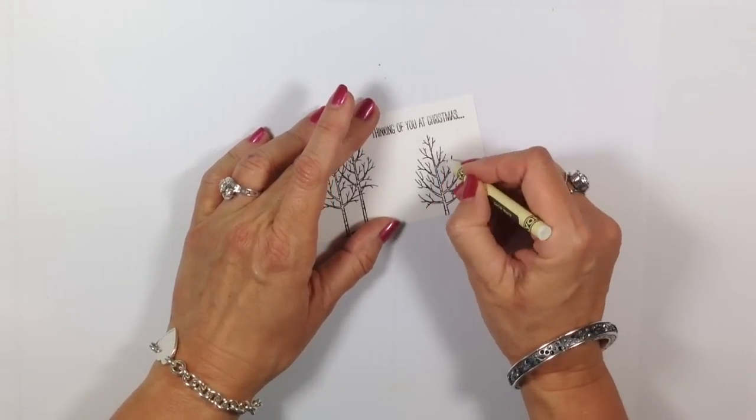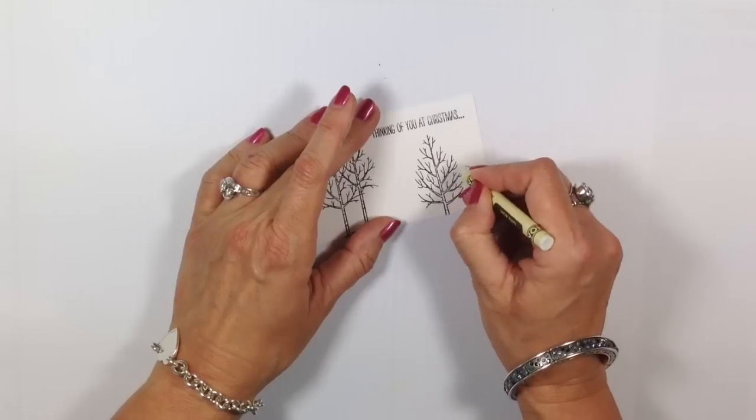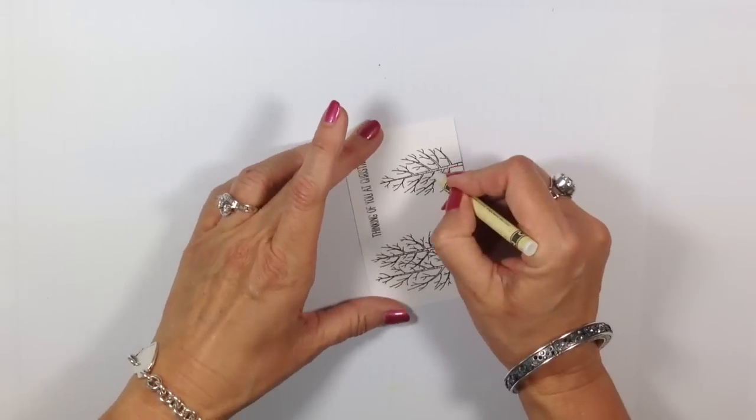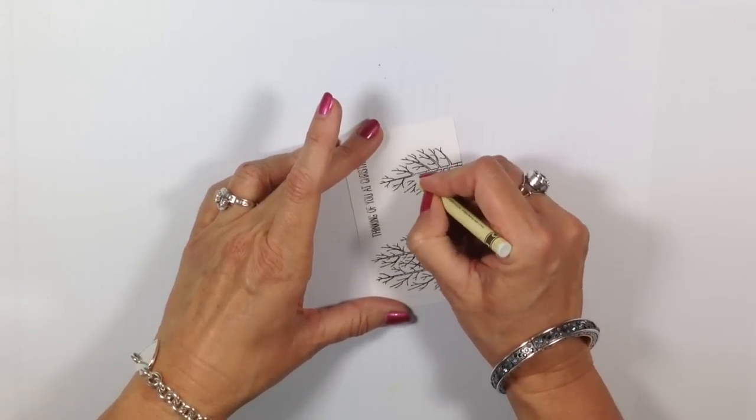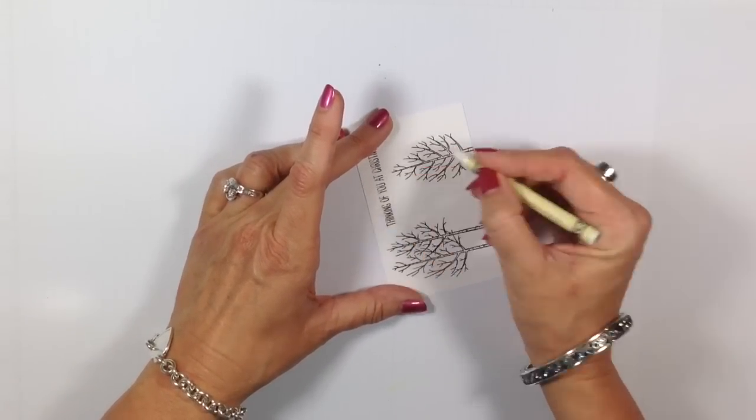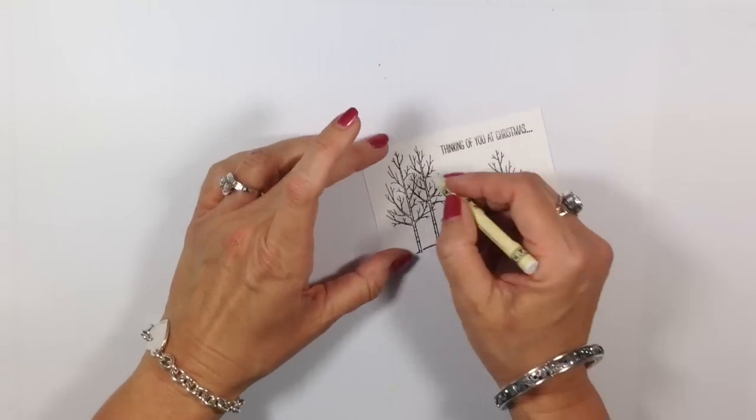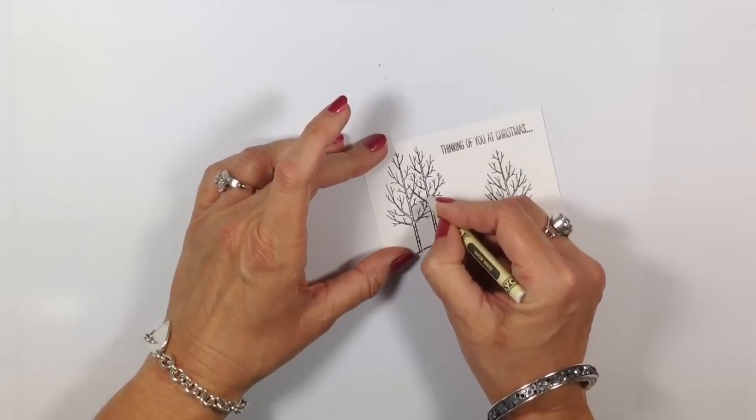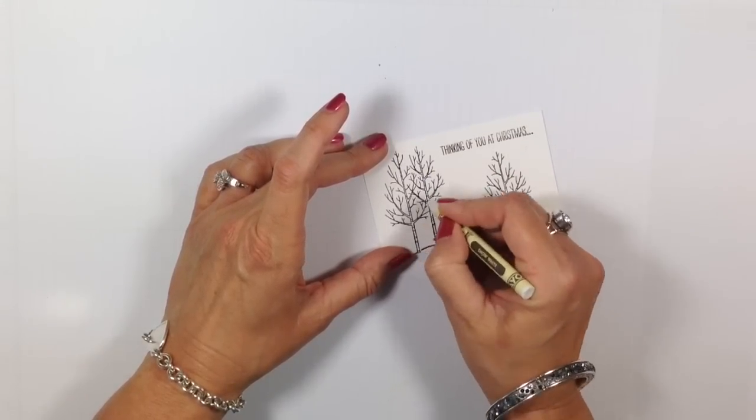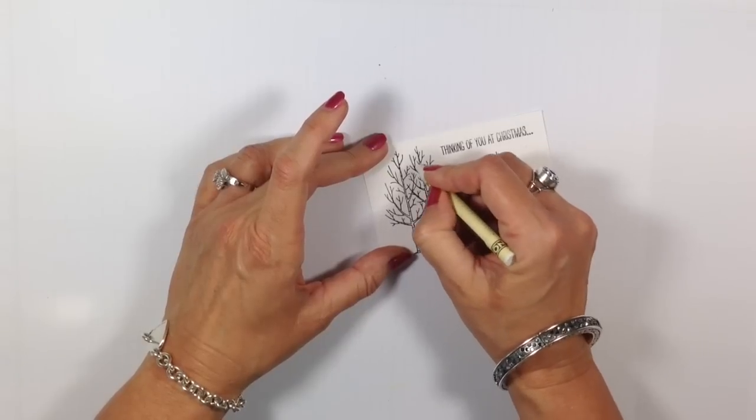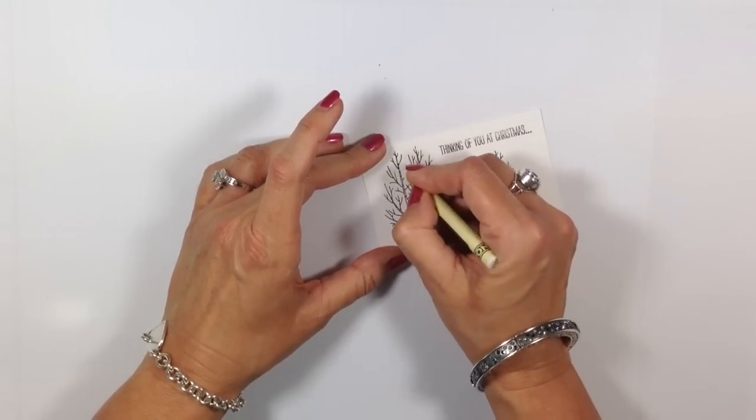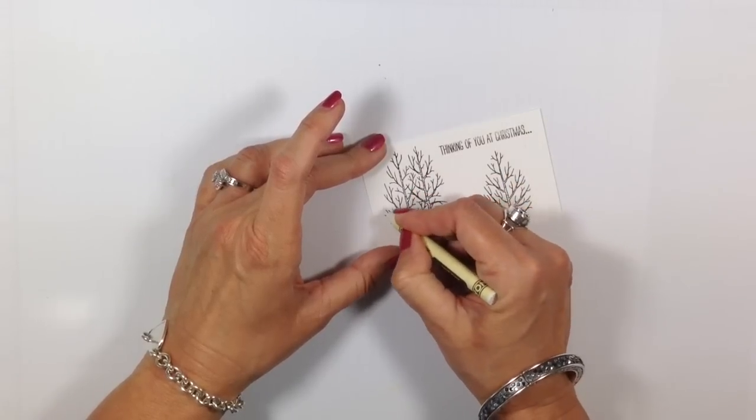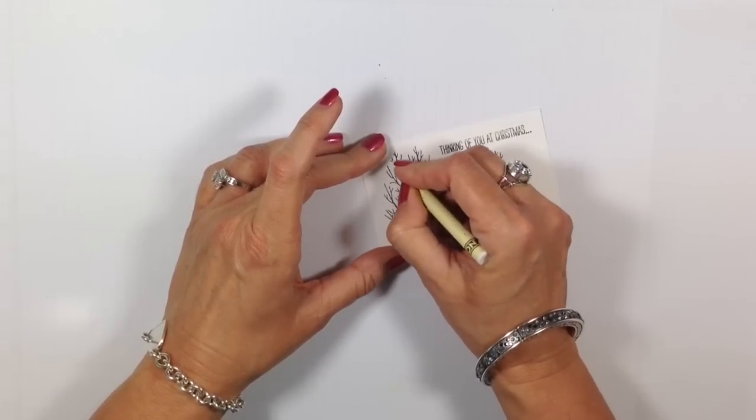This is called the crayon resist technique. I'm going to come along on the top of the branches and draw a little color line. It's white on white so it's a little difficult to see. It's very easy to not see what you're doing because it is white and practically clear, so just keep yourself moving down so you don't miss anything.